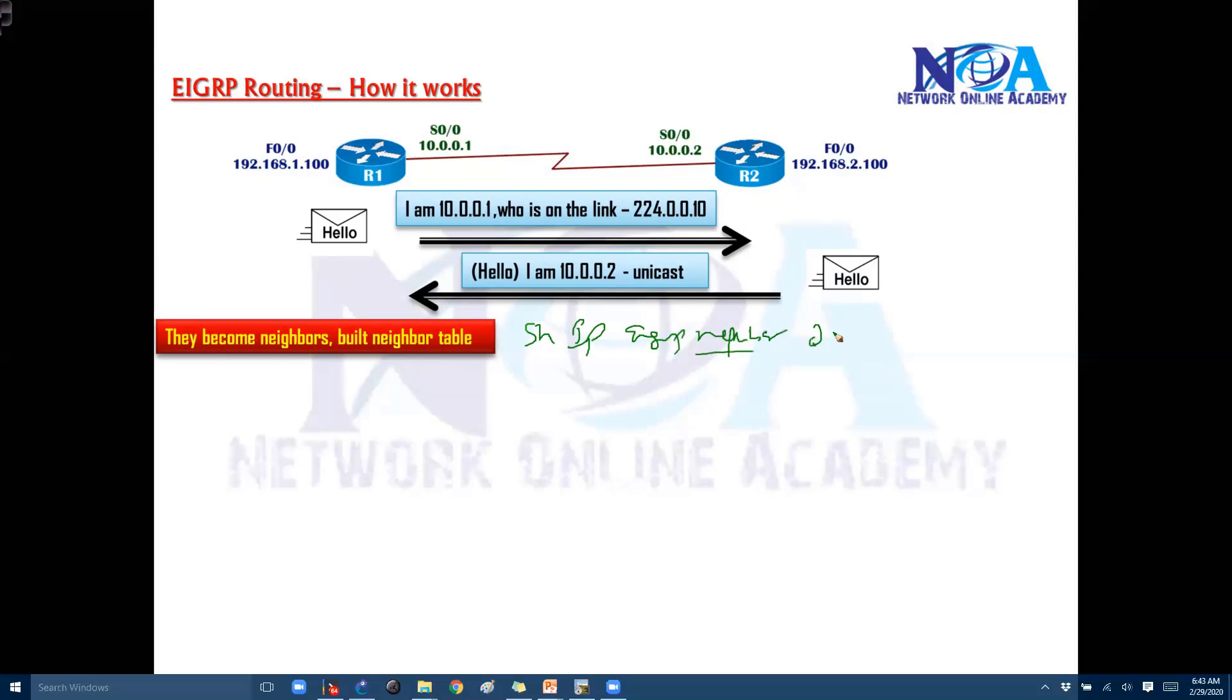And again this neighbor table is the basic thing we'll see when we do some troubleshooting. This is the first thing we'll try to verify in general. Now the first step is they need to establish the neighbor relationship and that's what happens initially.